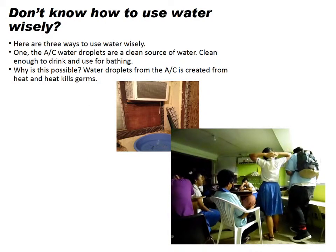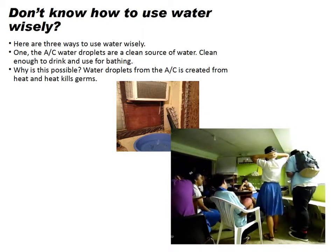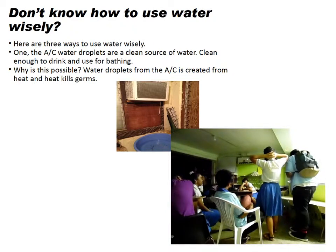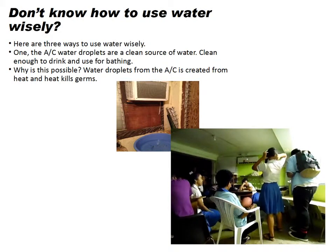Don't know how to use water wisely? Here are three ways to use water wisely. One: AC water droplets are a clean source of water, clean enough to drink and use for bathing. Why is this possible? Water droplets from the AC are created from condensation, and heat kills germs.